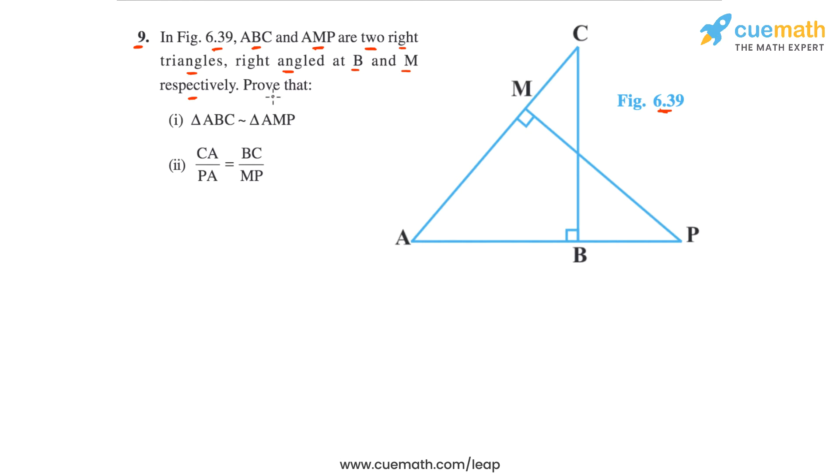Okay, so we have to prove in the first part that triangle ABC is similar to triangle AMP. Triangle ABC is this triangle that I've highlighted, and triangle AMP is this second triangle that I've highlighted, and we have to show that these two triangles are similar.